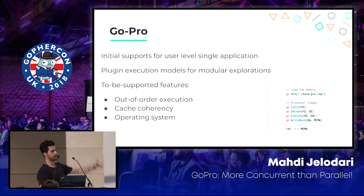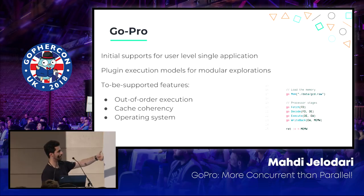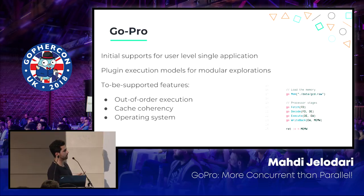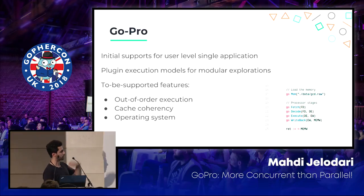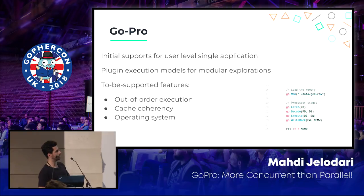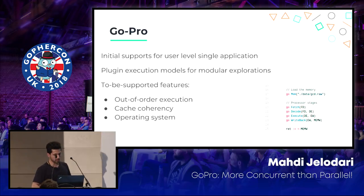It basically establishes the pipeline. The first one reads from memory — reads the instructions. There's a fetch unit that fetches data from memory and takes instructions, passing them to the decoder. The decoder takes the instruction, takes the opcode and data bits, and passes them through to the execution unit. Then there's a memory write-back which writes back the executed data, basically.